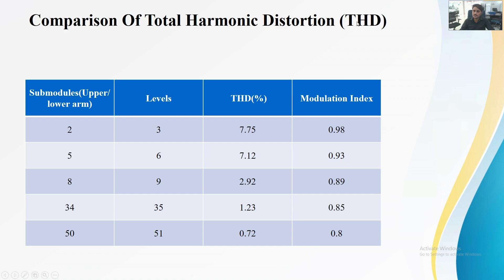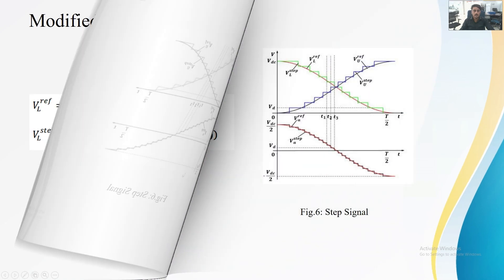These are the comparisons of total harmonic distortion and modulation index. When we increase the number of submodules and levels from 3 to 51, the THD is reduced and the modulation index also reduces. At 3 levels, the THD was 7.75 and modulation about 1.0, which is high. Increasing from 3 to 6, 9, 35, and 51 levels, the THD becomes 7.12, 2.92, 1.32, and finally 0.72, which is less than 0.8 and meets the IEEE standard. The modulation index of approximately 0.8 also meets the IEEE standard.